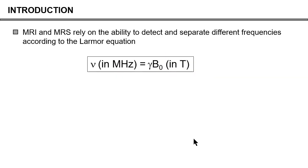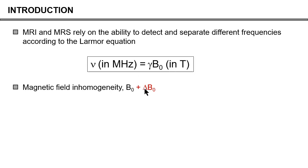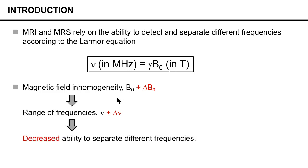Most people in the audience know that MRI and MRS — almost all aspects of it — rely on the ability to detect and especially separate different frequencies according to the Larmor equation, which says that the frequency you get, your Larmor frequency, is proportional to the magnetic field in Tesla. This simple equation also means that if you have an inhomogeneity in your main magnetic field, delta B0, that automatically introduces a range of frequencies, and therefore decreases your ability to separate those frequencies. And that is a bad thing for both MRI and MRS.